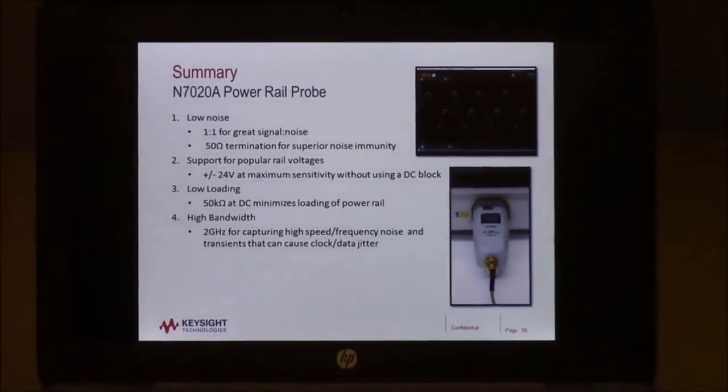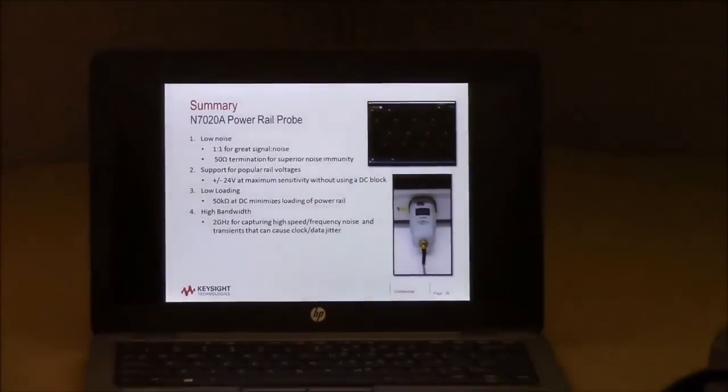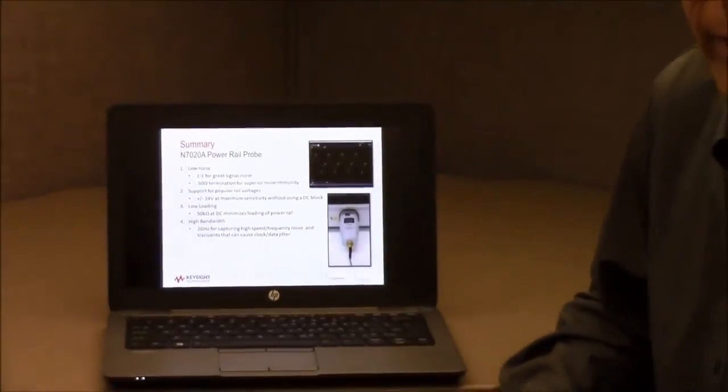During the examples that I showed you today we're using the Keysight S series 10-bit high definition oscilloscope. That would be the tool of choice or you can also use our InfiniVision x-ray scopes which are also compatible with the N7020A Power Rail Probe. I want to thank you for taking the time and if you want to learn more about this product please just go to Keysight.com and search on N7020A. Thank you very much.